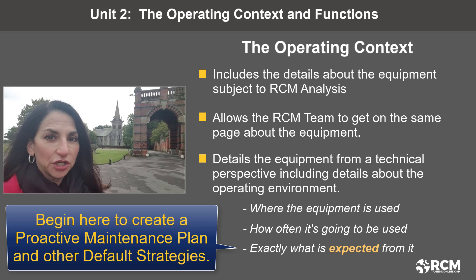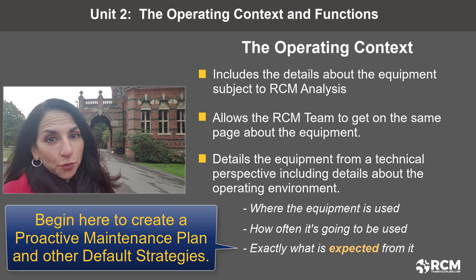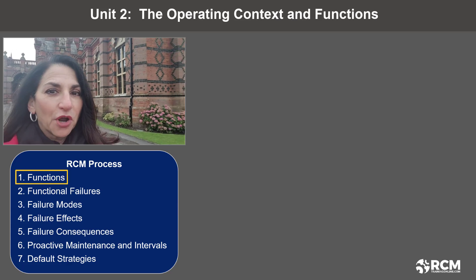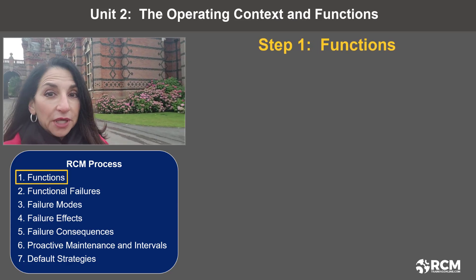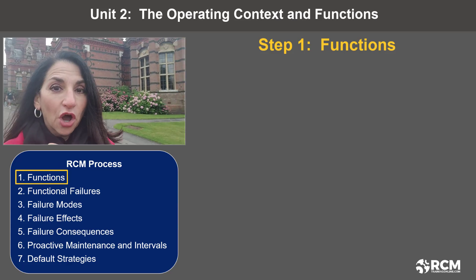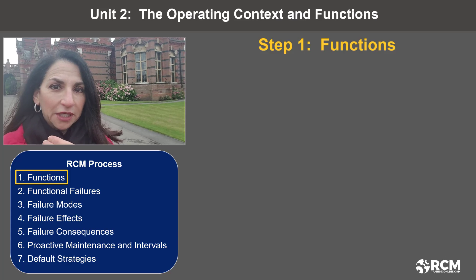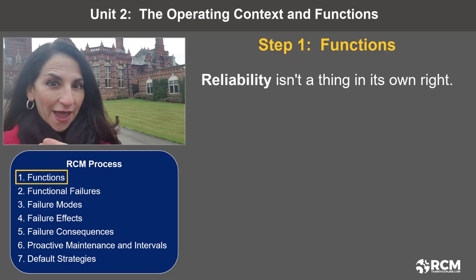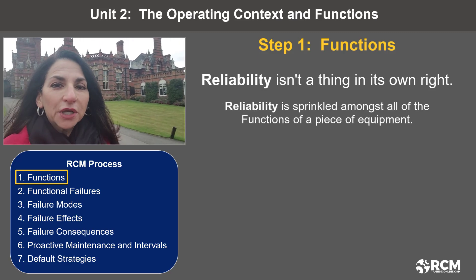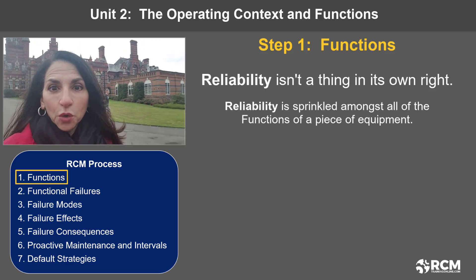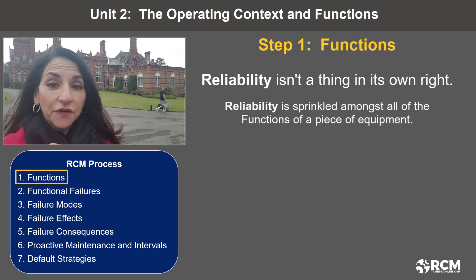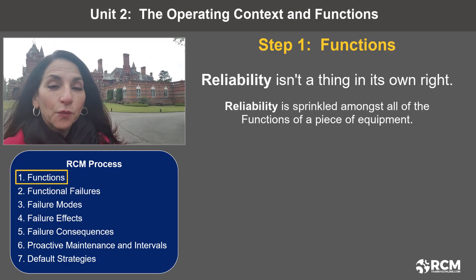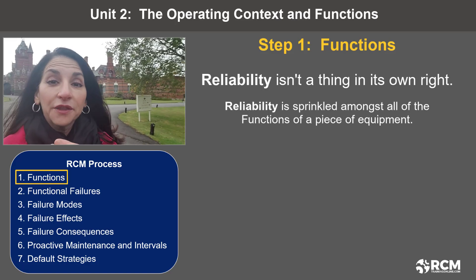That's where you need to begin when creating a proactive maintenance plan and other default strategies for equipment. There's no coincidence that the RCM process starts with functions — there are seven steps in the process and the first one is writing functions. My mentor John Mowbray taught me that reliability isn't a thing in its own right, but rather reliability is sprinkled amongst all of the functions of a piece of equipment. When we identify functions and include specific performance standards, we are defining the kind of reliability that we need and want from our equipment.